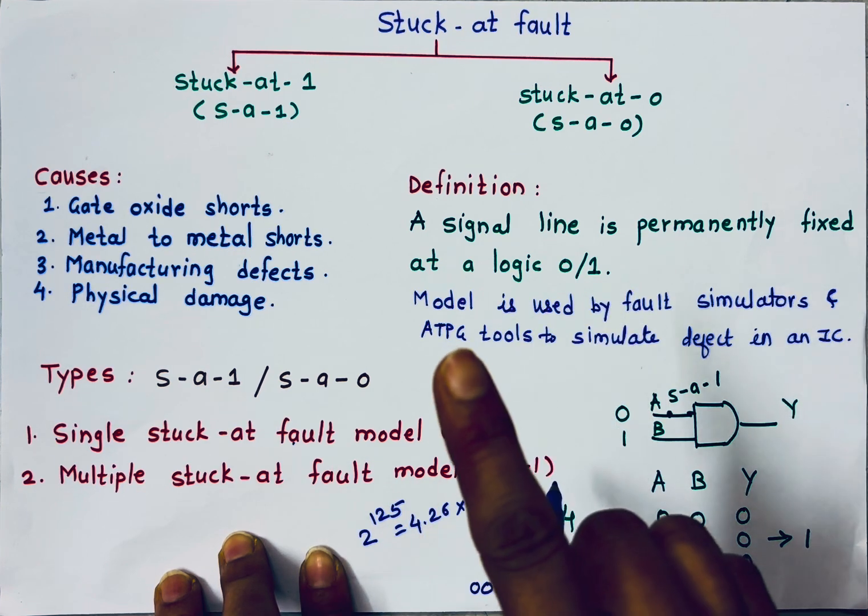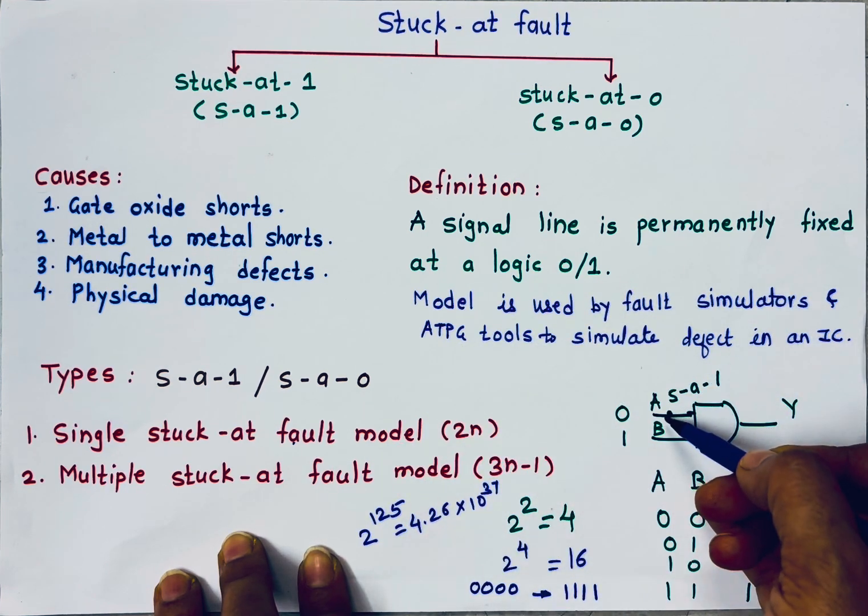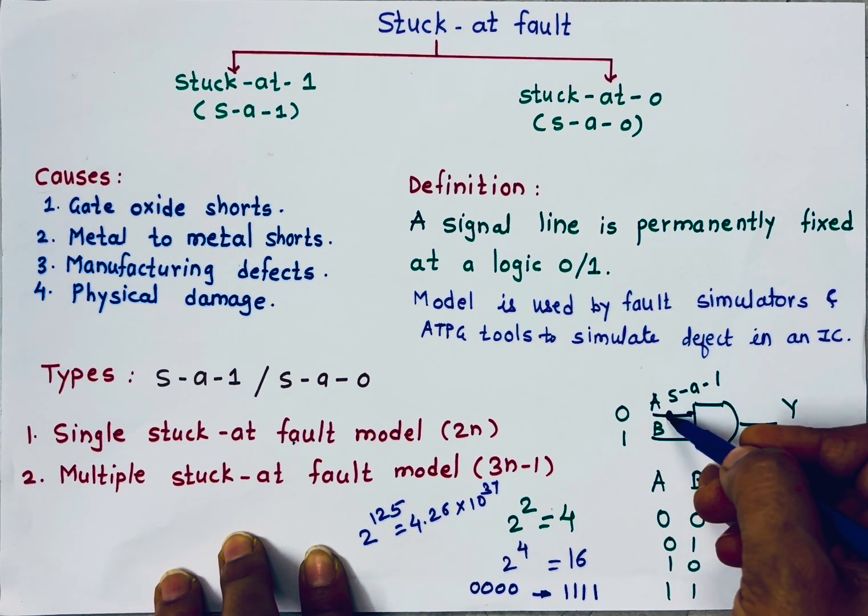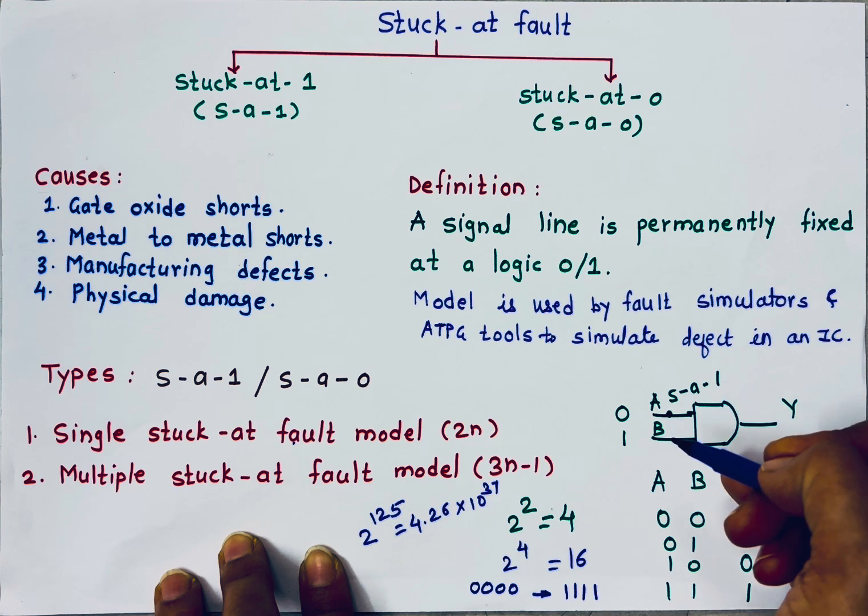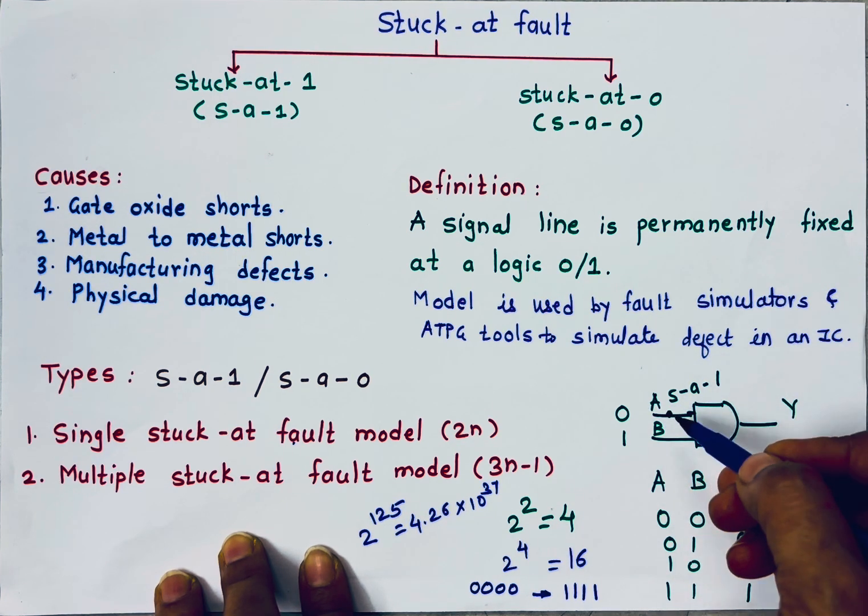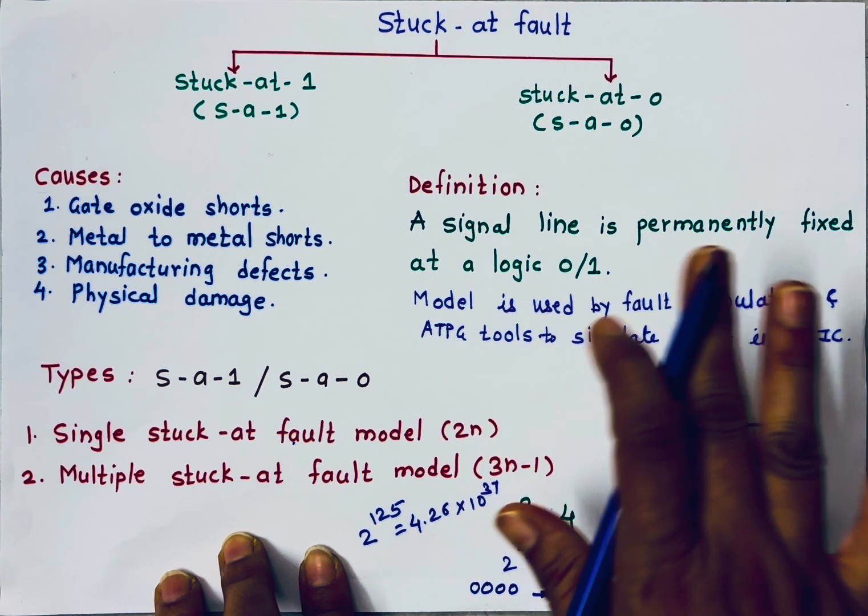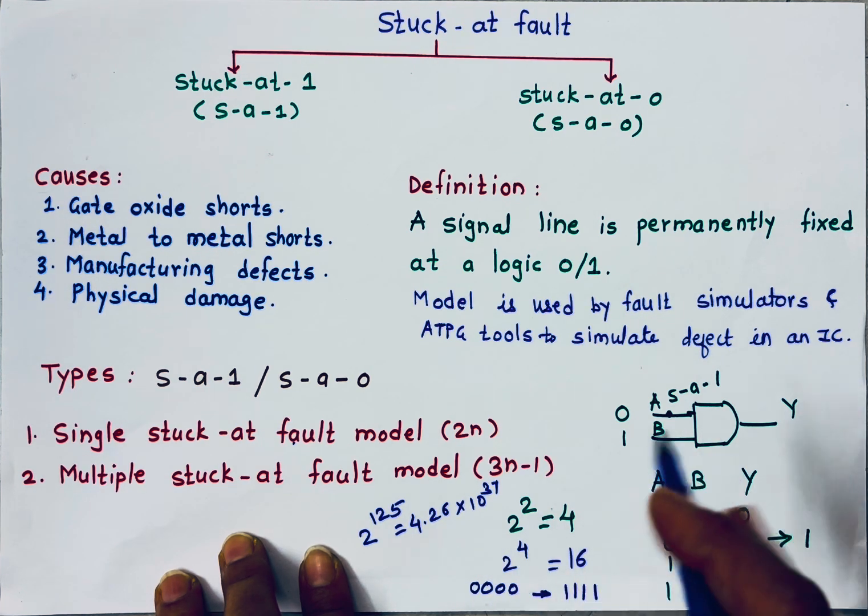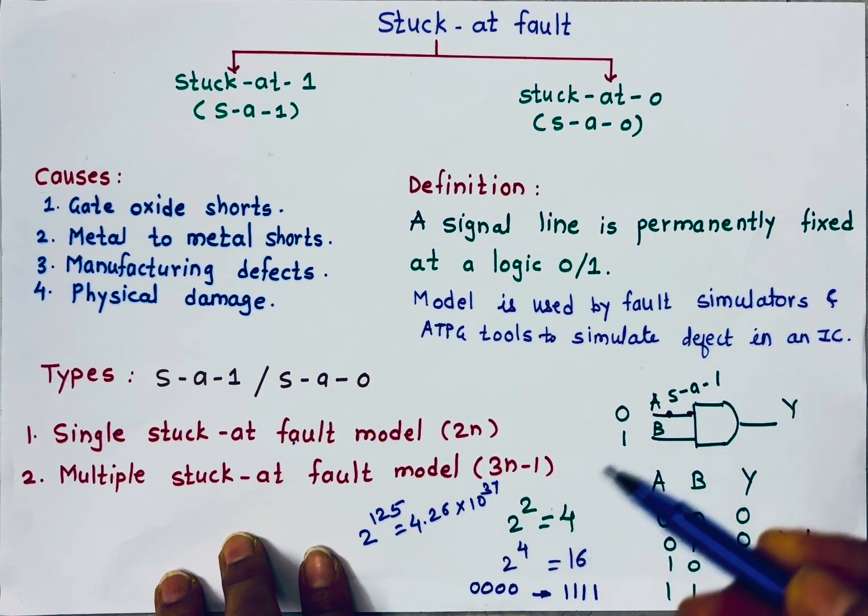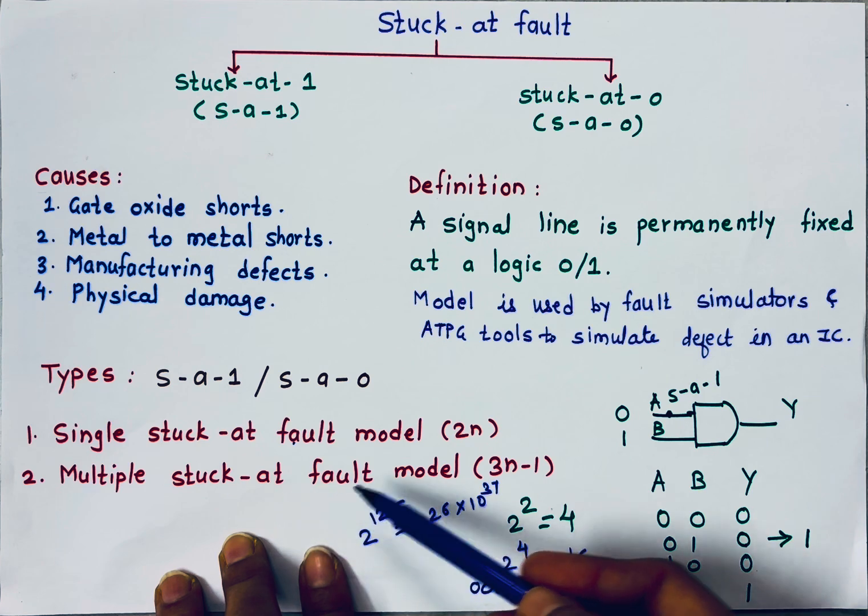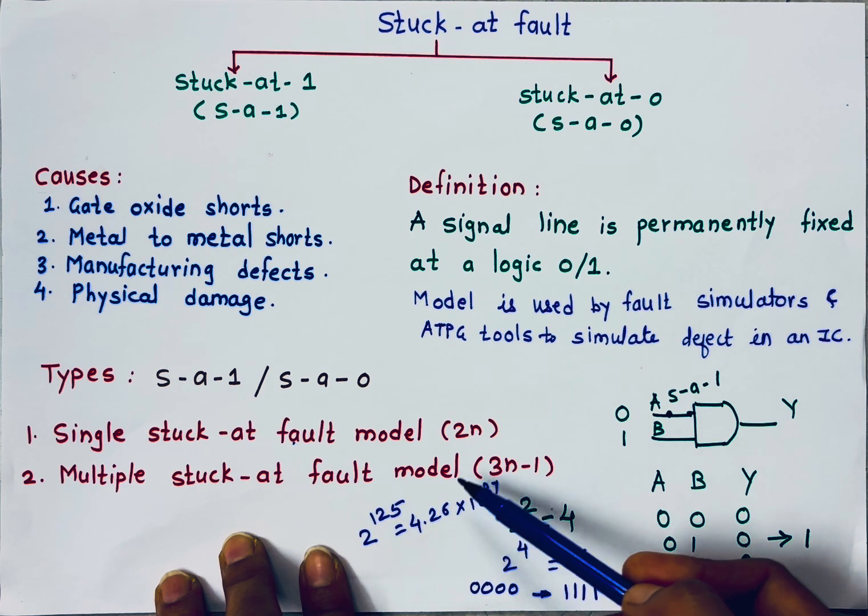Single stuck at 1 means what? It assumes 1 input is stuck at 1 or stuck at 0. Remember, stuck at 1 means it is stuck to 1. Stuck at 0 means it is stuck to 0. So single stuck at 1 means one input is stuck to 1, other input is perfect. But is it possible always? No. Sometimes, it is possible that both inputs are stuck to 1 or stuck to 0 or one input is stuck to 1, another input is stuck to 0. So for that, multiple stuck at fault models are used.